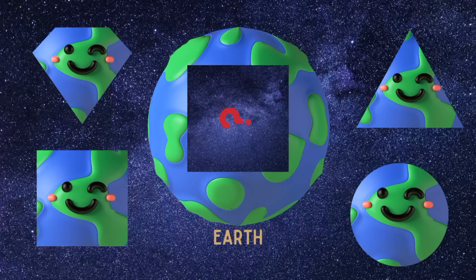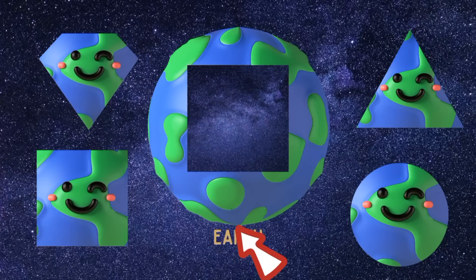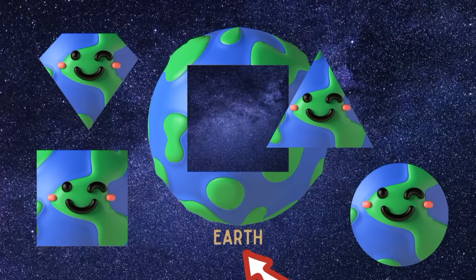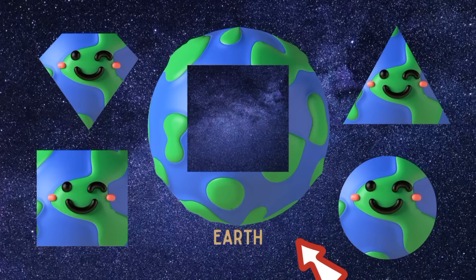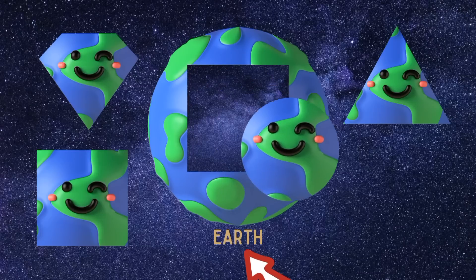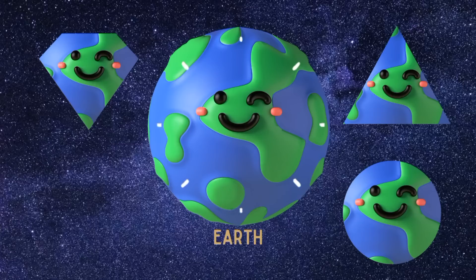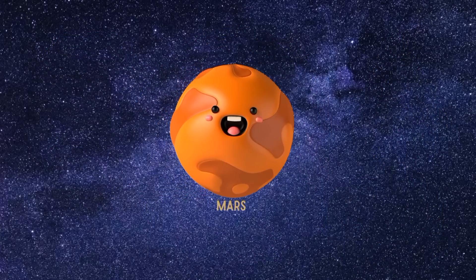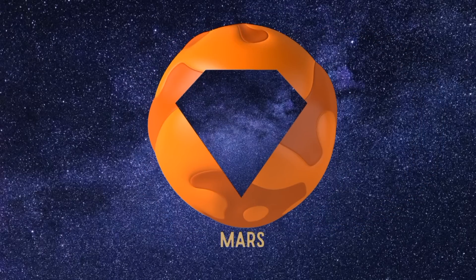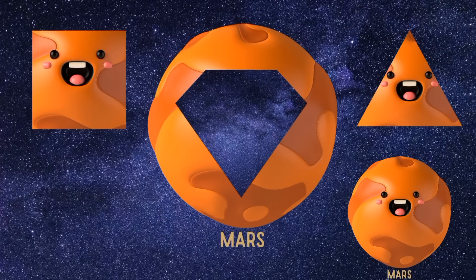What is here? Diamond. Diamond. Triangle. Circle. Square. What is here? Circle. Square. Triangle. Diamond.